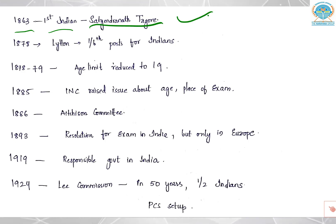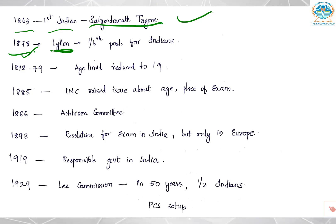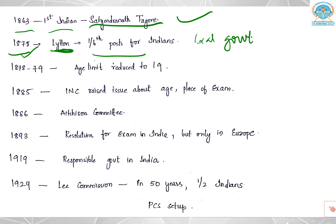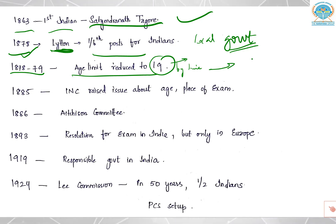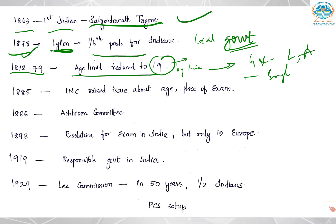Next, in 1878, Lord Lytton — the same year we got the Vernacular Press Act to control the press — one-sixth of the posts would be for Indians nominated by local government. Also in that year, the age limit was reduced to 19. At 19, you would need knowledge on many subjects like Greek, Latin, literature, arts, etc., and the exam was being conducted in England — so it was very tough for such young people.